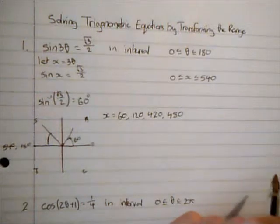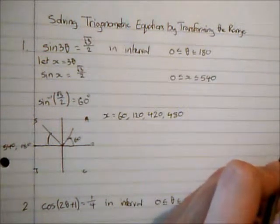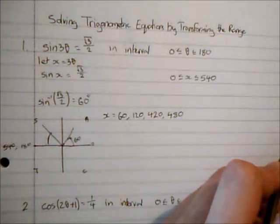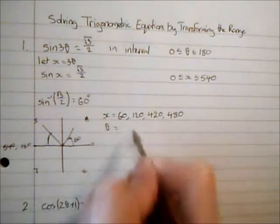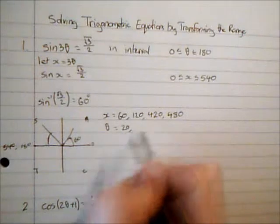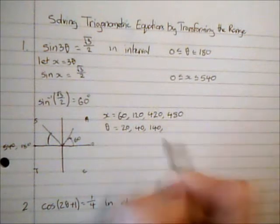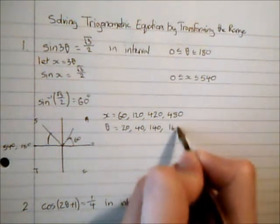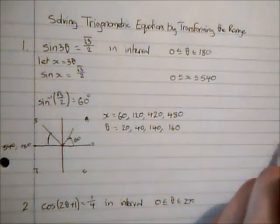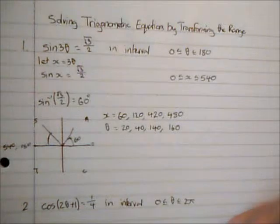If I mark that this is also 540, a revolution and a half, 60 before that is 480. My next solution is past two revolutions, over 720. So I've got my four solutions for x, but x equals three theta, therefore theta equals x over three. So theta would be 20, 40, 140, and 160.